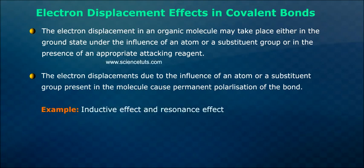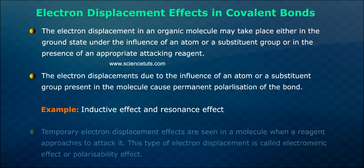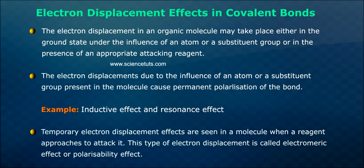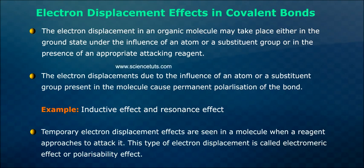Examples of permanent polarization include the inductive effect and resonance effect. Temporary electron displacement effects are seen in a molecule when a reagent approaches to attack it. This type of electron displacement is called the electromeric effect or polarizability effect.